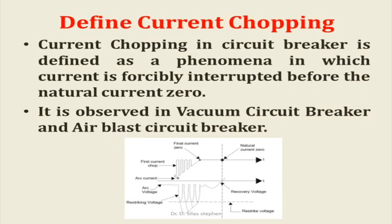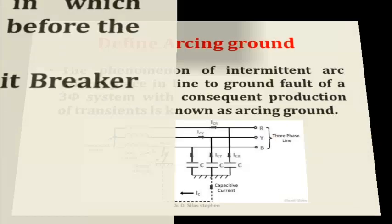Define Current Chopping. Current chopping in a circuit breaker is defined as a phenomenon in which current is forcibly interrupted before the natural current zero. It is observed in vacuum circuit breakers and air blast circuit breakers.